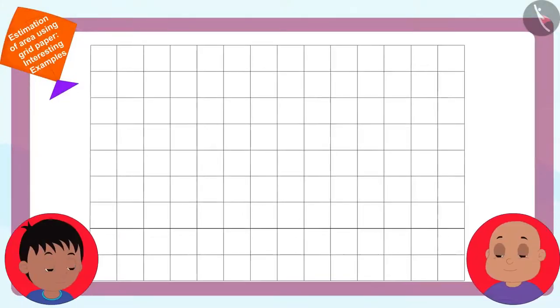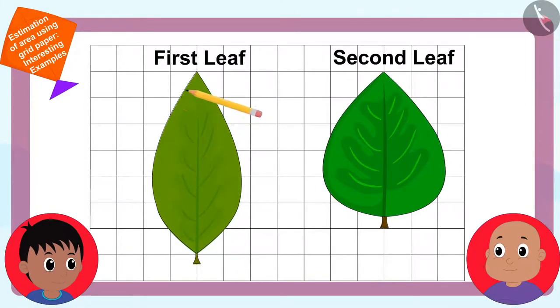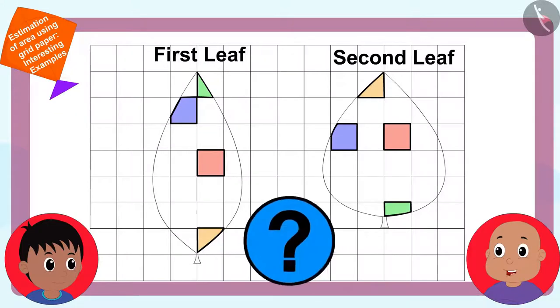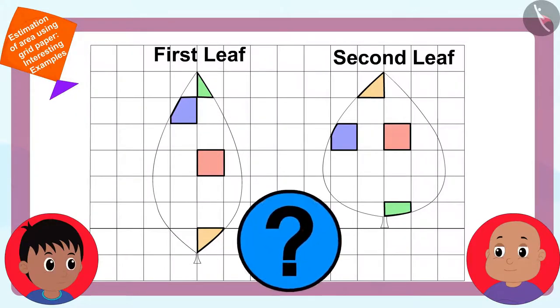Saying this, Raju created outlines of both the leaves using a pencil on a grid paper. But Raju, the areas enclosed by the outline of these leaves have some full squares, some half, some more than half and even some less than half squares. Then how are we going to find their area? Bablu asked Raju.